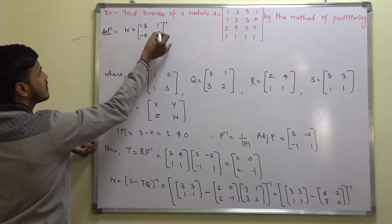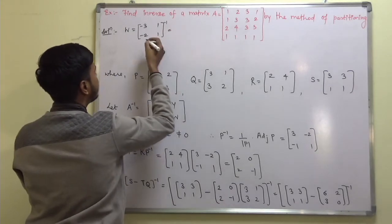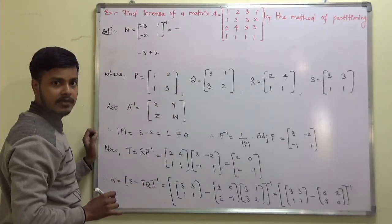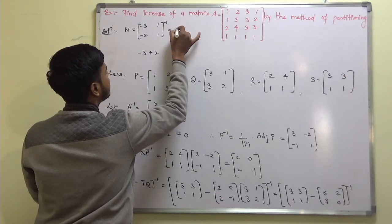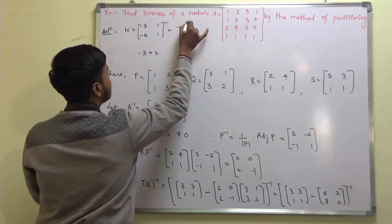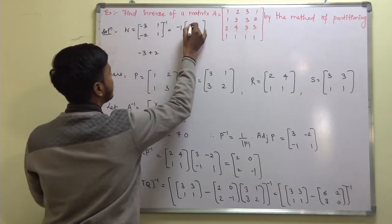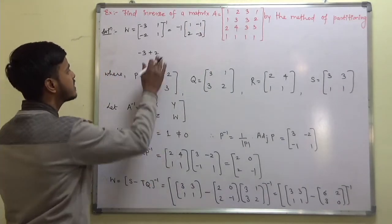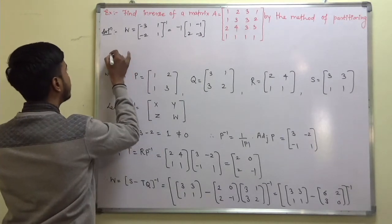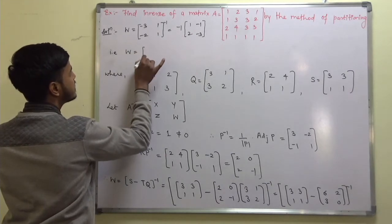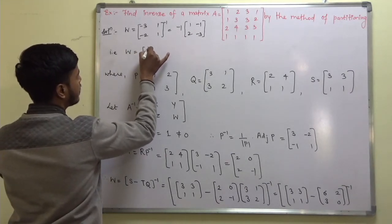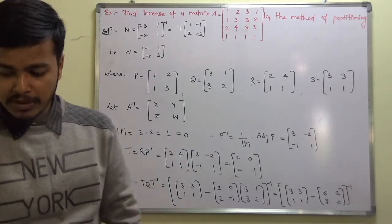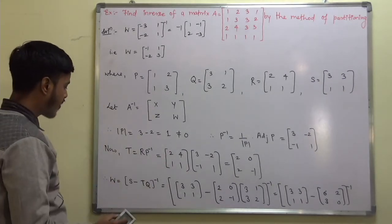The inverse of this matrix is 1 upon the determinant, which is minus 1, into the adjoint. Swap the diagonal elements and give minus sign to non-diagonal elements. Multiplying by the minus sign gives W equal to minus 1, minus 2, 1, 3.